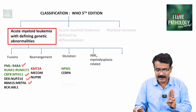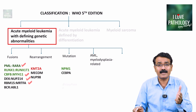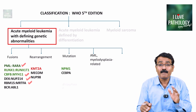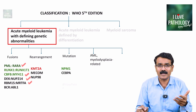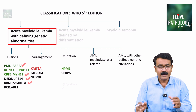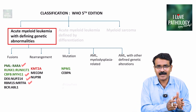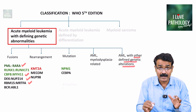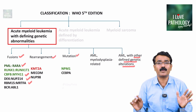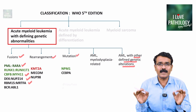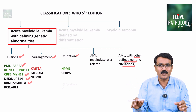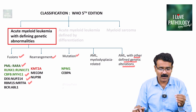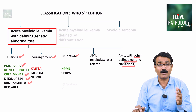The fourth category is AML which is myelodysplasia-related. If the AML is a consequence of myelodysplasia, that's another category. And there is also a category for AML with other defined genetic alterations other than fusion, rearrangement, and mutation. So if you see any of these genetic rearrangements, fusions, or mutations, this comes under the first category: acute myeloid leukemia with defining genetic abnormalities.